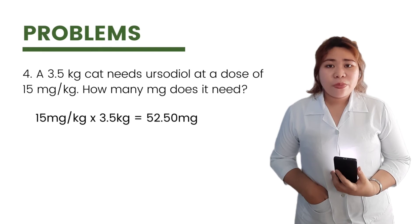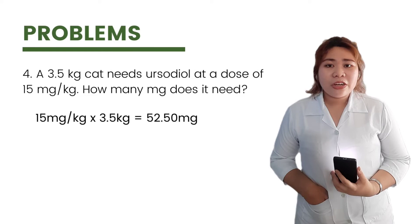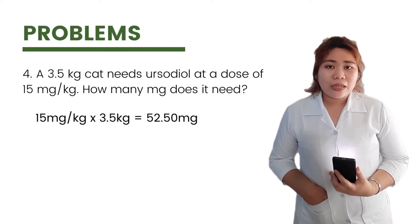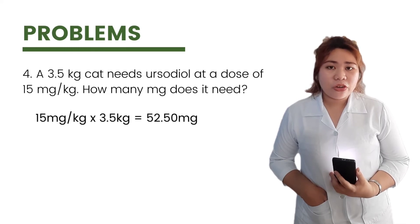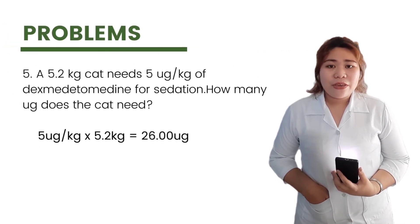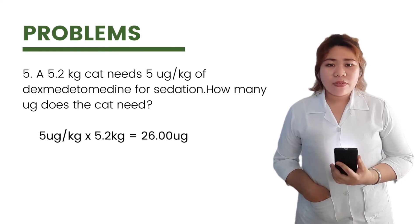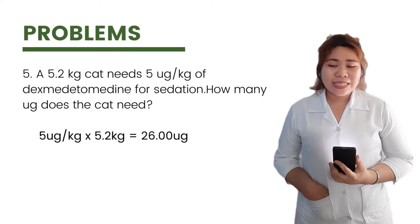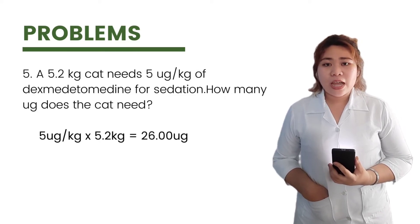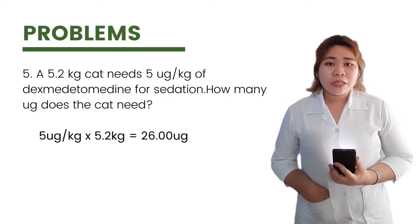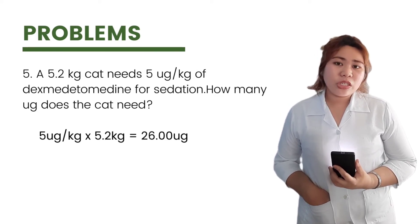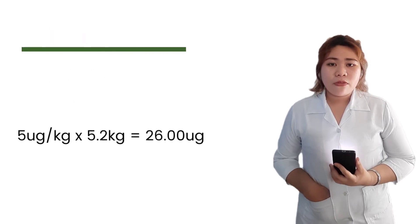Third, a 3.5 kilogram cat needs ursodiol at a dose of 15 mg/kg. How many milligrams does it need? This results in 52.50 mg. Lastly, a 5.2 kilogram cat needs 5 microgram/kg of dexmedetomidine for sedation. How many micrograms does the cat need? 5 mcg/kg × 5.2 kg = 26.00 micrograms.